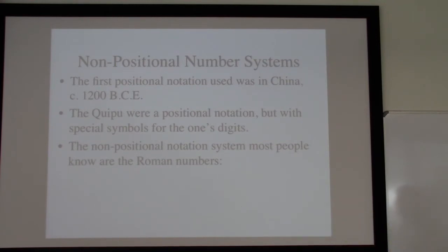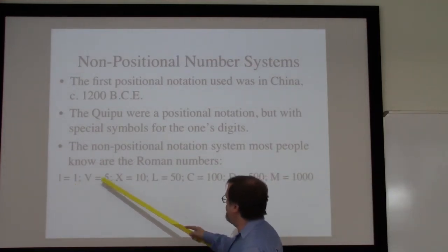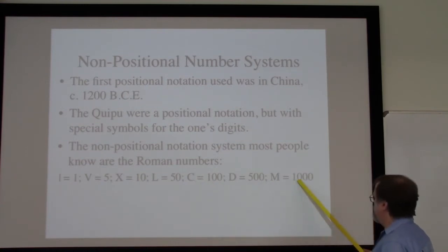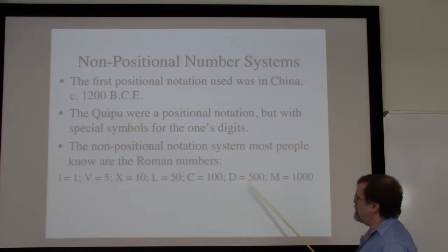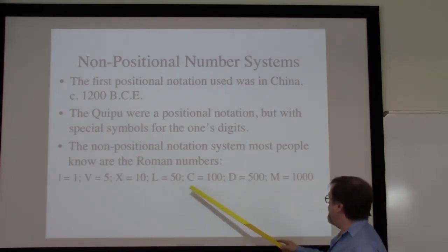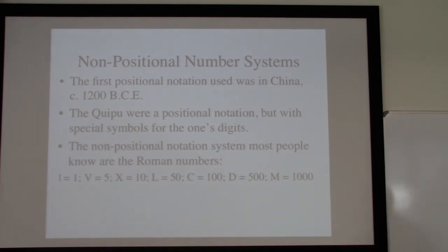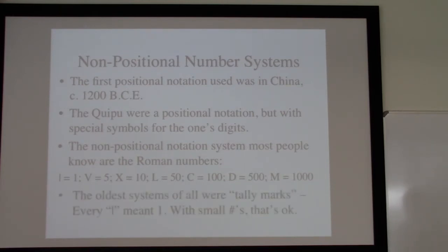Of all the various non-positional number systems, the one you're probably most familiar with is Roman numerals, where in base 10 we use symbols for 1, 10, 100, and 1000. This really has a dual base system though, because we have special numbers for the intermediates — special symbols for 5, 50, and 500. If we were using positional notation, you can't really mix bases and use some 5s and some 10s, but it works just fine for these non-positional systems.